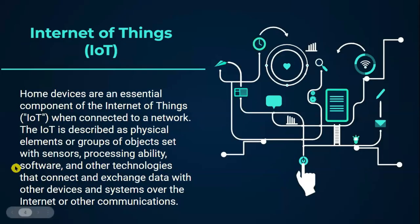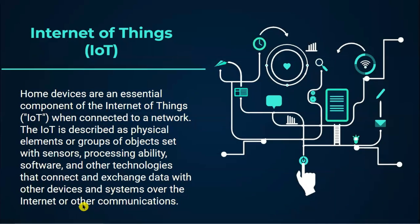We cannot talk about smart home technology without mentioning the Internet of Things. Home devices are an essential component of the Internet of Things when connected to a network. The IoT is described as physical elements or groups of objects set with sensors, processing ability, software, and other technologies that connect and exchange data with other devices and systems over the Internet or any other communications network.